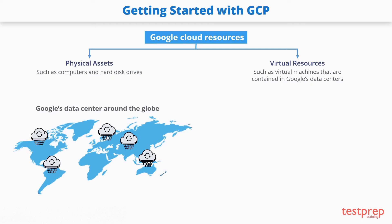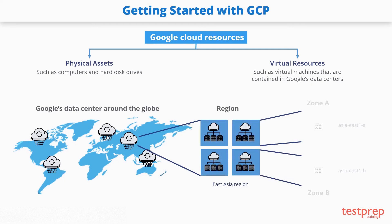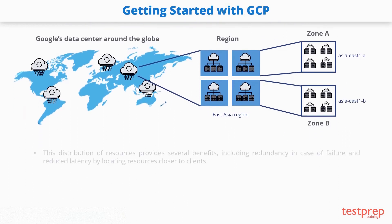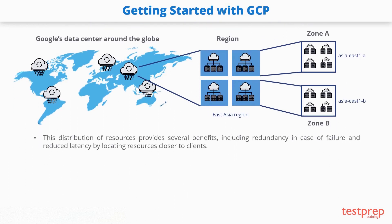Each data center location is in a region. Each region is a collection of zones, which are isolated from each other within the region. Each zone is identified by a name that combines a letter identifier with the name of the region. For example, Zone A in the East Asia region is named Asia East 1A. This distribution of resources provides several benefits, including redundancy in case of failure, and reduced latency by locating resources closer to clients.